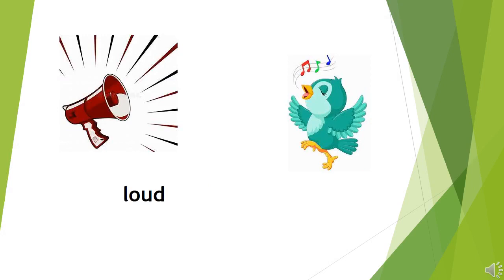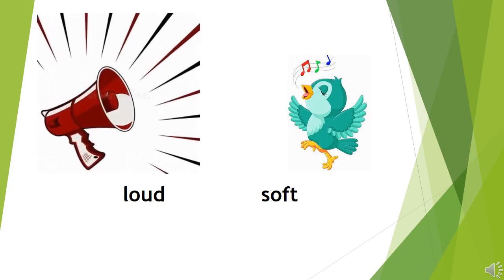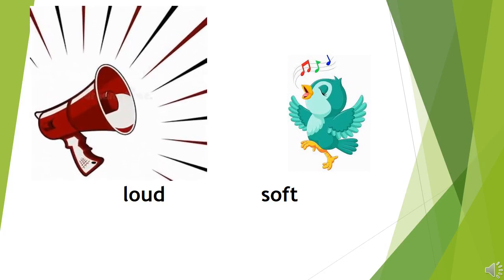Opposite of loud is soft. Loud, soft. Now you can see in the picture there is a loudspeaker. Whenever we hear sound from a loudspeaker, we tend to close our ears — we don't like that voice, it is very strong, very loud. But whenever we hear some bird chirping, we like it, because the bird is chirping very softly. So opposite of loud is soft.